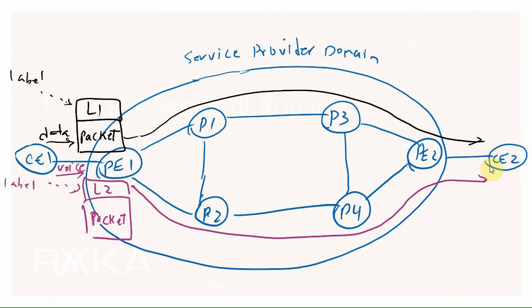When forwarding in an MPLS network, when PE1 receives traffic from CE1, it adds a label above the data traffic that shows the entire path. This label shows the entire path and all routers in the path must know this label and the corresponding path. The traffic is therefore forwarded via certain predefined paths. In an MPLS network, by changing the label on the edge of the network, we can control the entire path of the traffic.